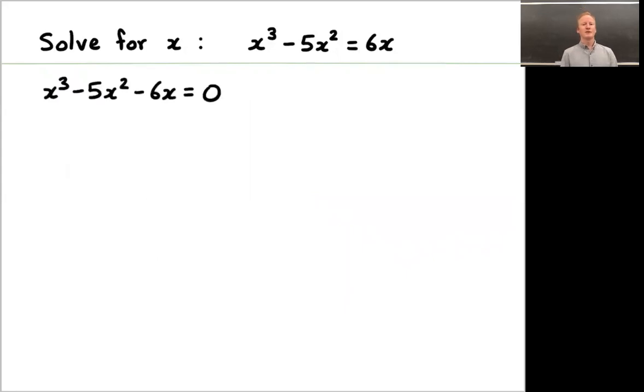Welcome back. We'll start by subtracting 6x. Now we can factor out an x. So we have x times a quadratic, that quadratic being x squared minus 5x minus 6. We have x times a quadratic equals zero. If you multiply two things together and you get zero, then you know that one of those two things that you were multiplying had to be zero.